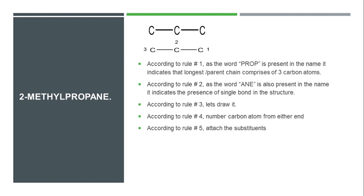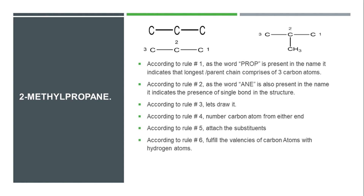According to rule 4, we number the carbons. The name '2-methylpropane' tells us that a methyl group is present on the second carbon. According to rule 5, we attach the methyl group to the second carbon atom. Then according to rule 6, we fulfill all remaining valences of the carbon atoms with hydrogen atoms. After fulfilling the valences with hydrogen, this gives us the complete structure of 2-methylpropane. That is the solution to part 1.